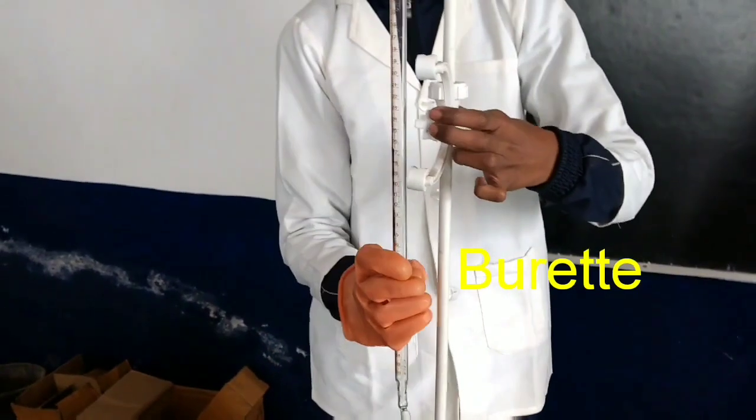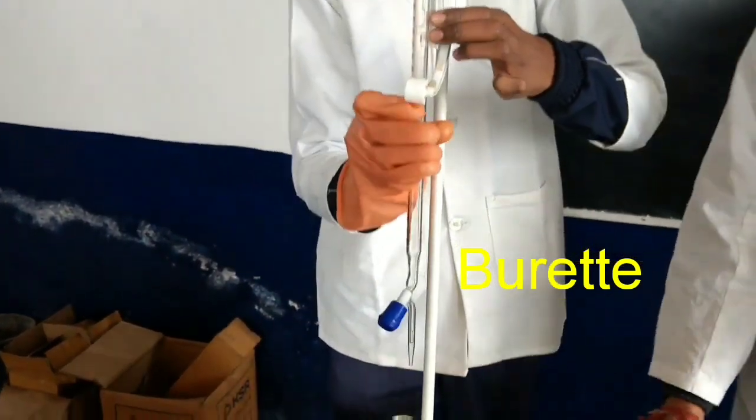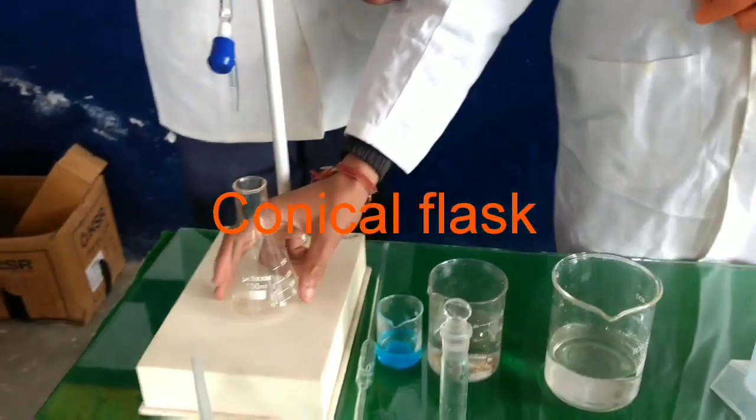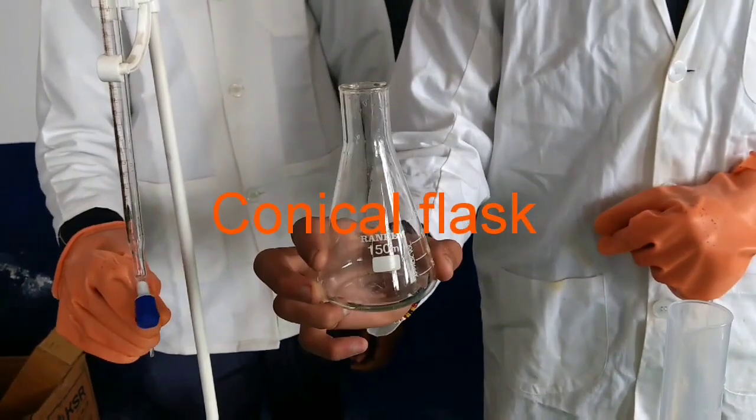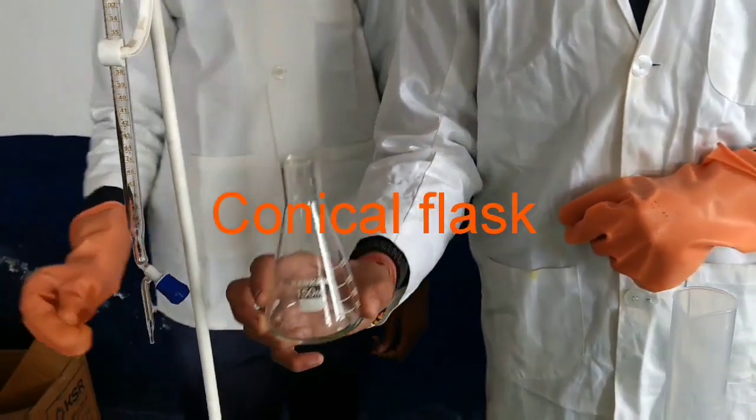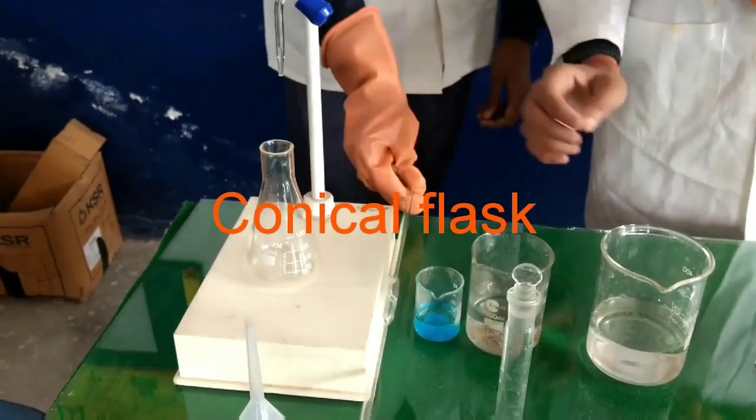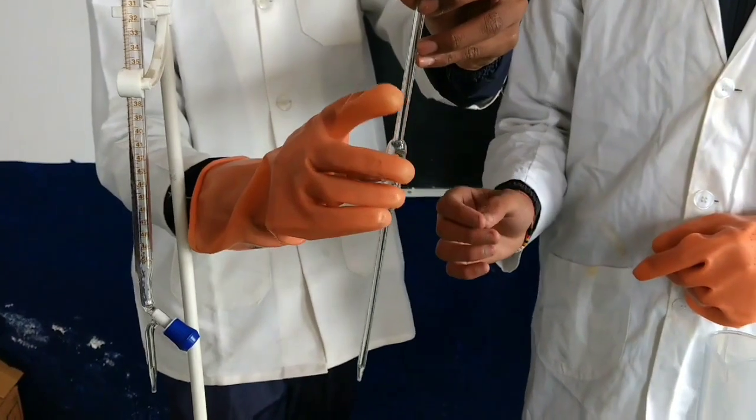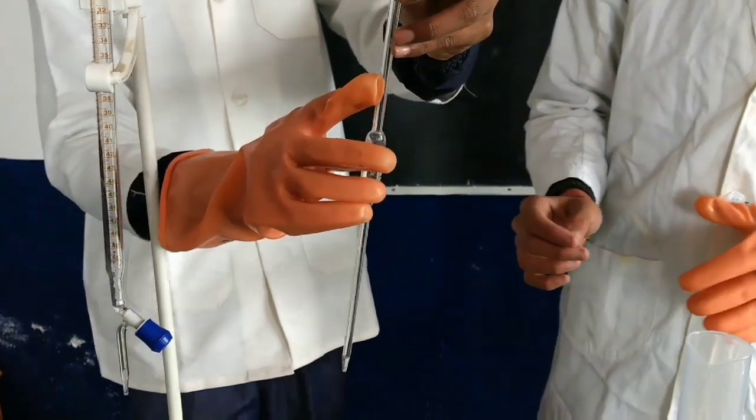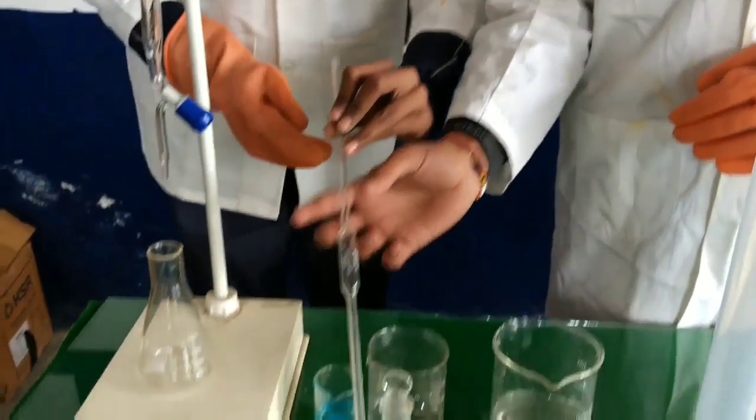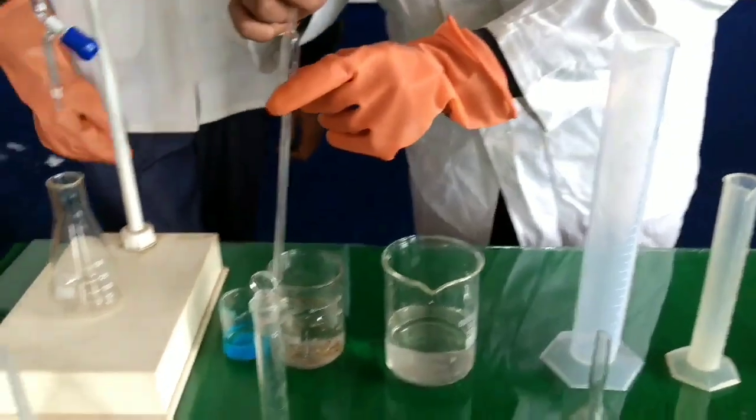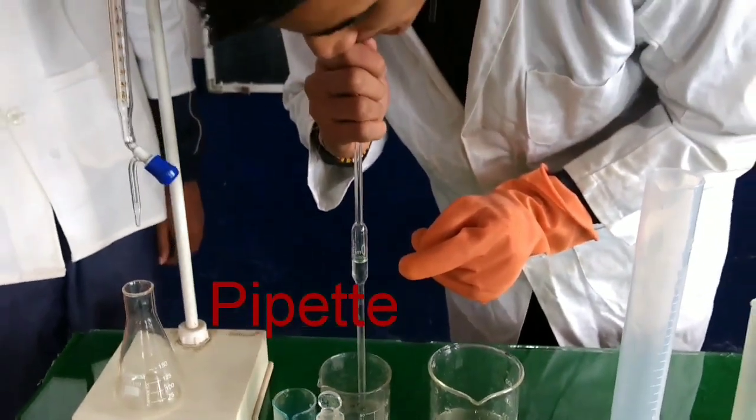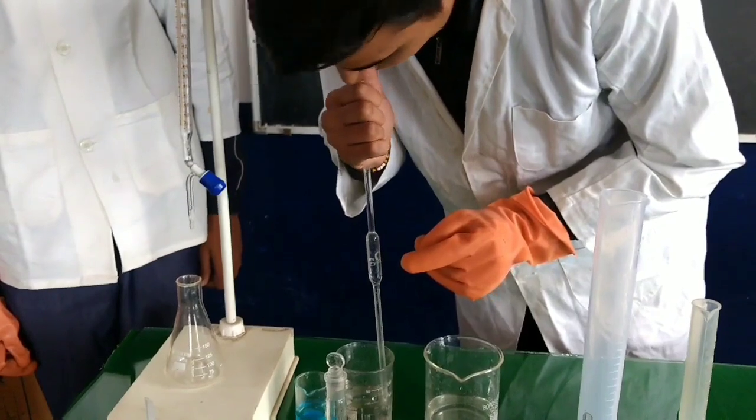Next is the apparatus for the volumetric analysis. This is a burette in which we fill unknown compound for the titration. And it is conical flask. After this, we are seeing the pipette. Pipette is used for pipetting out the unknown solution during the volumetric titrations.